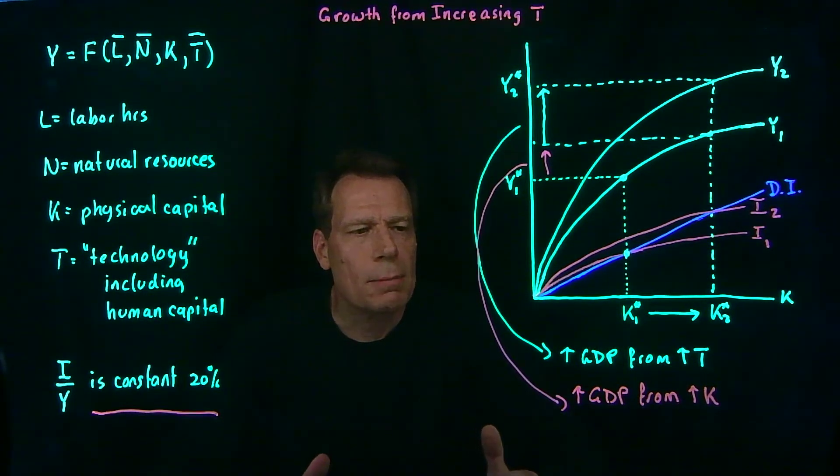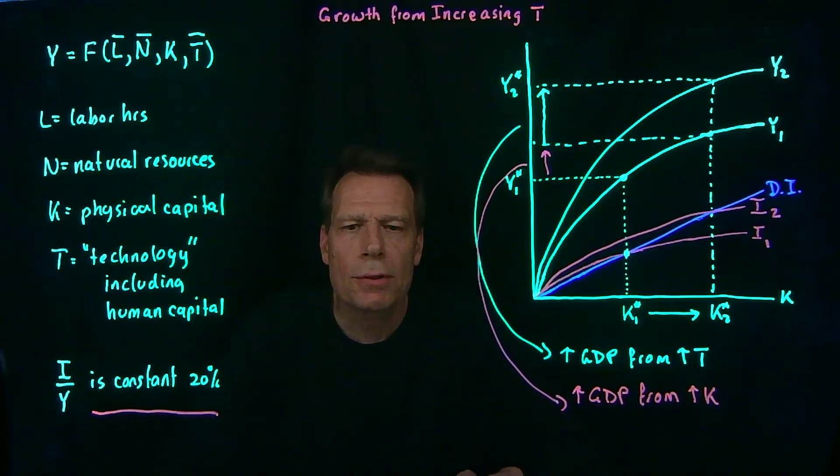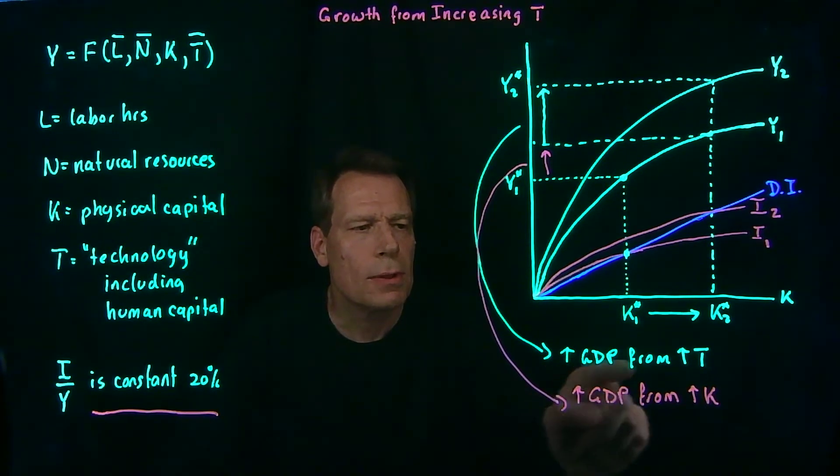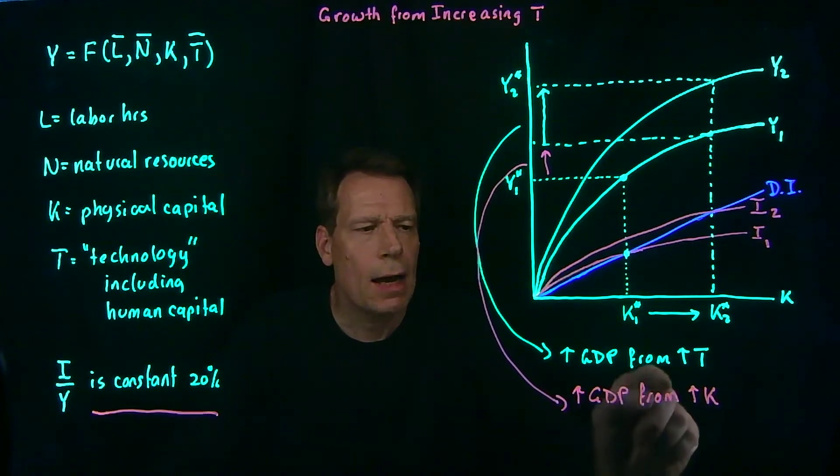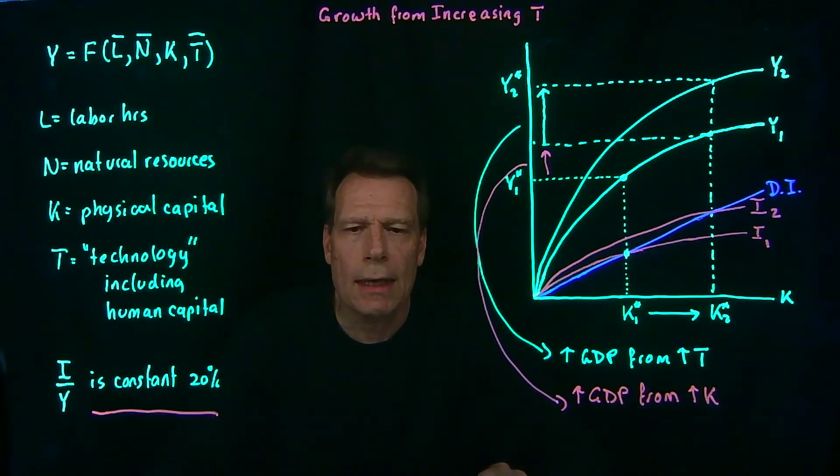So economists have gotten increasingly good at decomposing how much of the increase in GDP, how much of economic growth from an increase in technology is due to the technology itself, and how much is due to the increase in the capital stock that happens because of that investment curve rotating up.